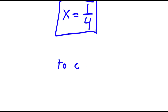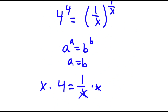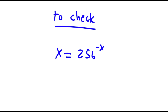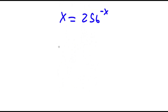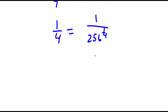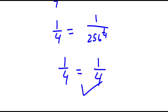Now to check: x is equal to 256 to the power of negative x, and x equals 1/4, so I have 1/4 is equal to 256 to the power of negative 1/4. This is the same thing as 1/4 is equal to 1 over 256 to the power of 1/4. Now 256 to the power of 1/4 is 4, so I have 1/4 is equal to 1/4, which is correct.